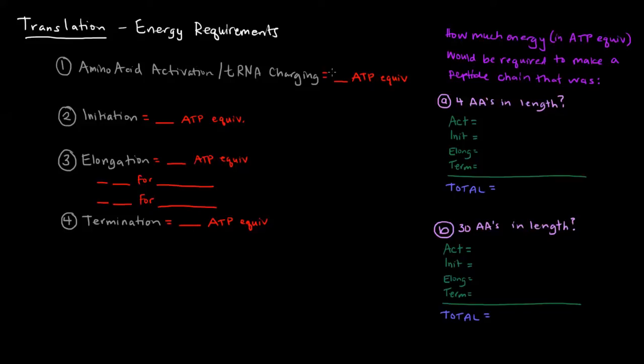So each activation step, or charging step, requires two ATP equivalents, and that's because we went from an ATP to an AMP and a pyrophosphate, and of course the pyrophosphate was hydrolyzed off into two inorganic phosphates. So that's the equivalent of using two ATPs.